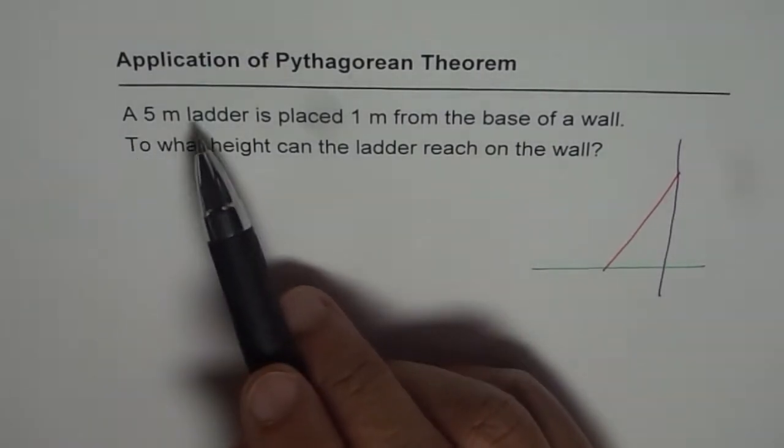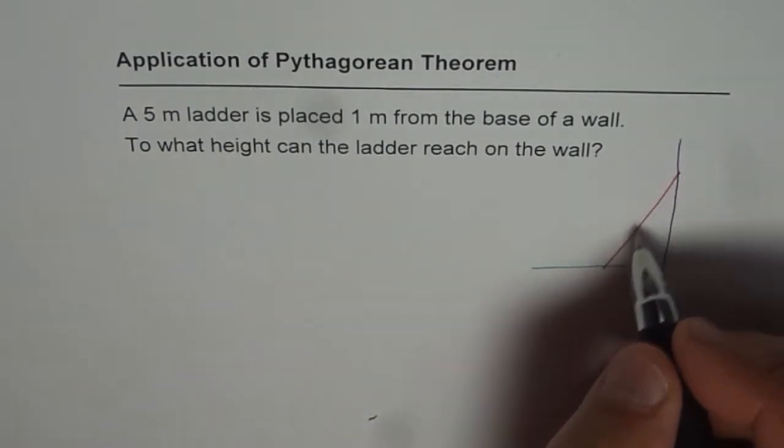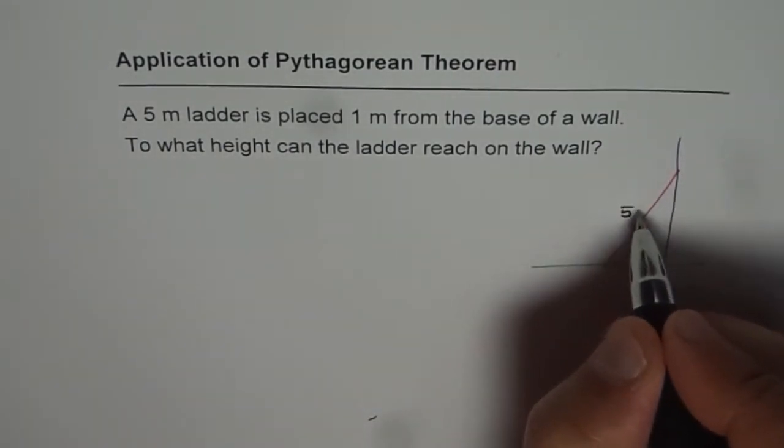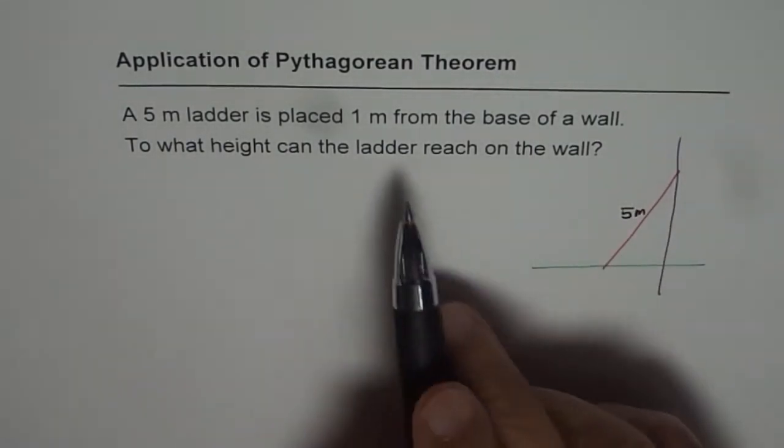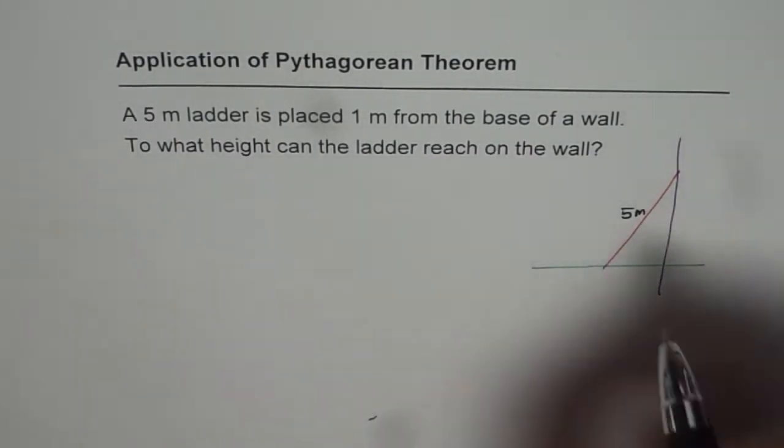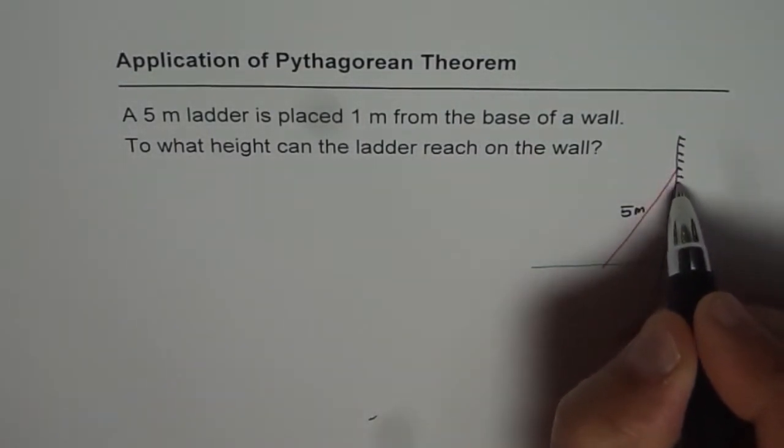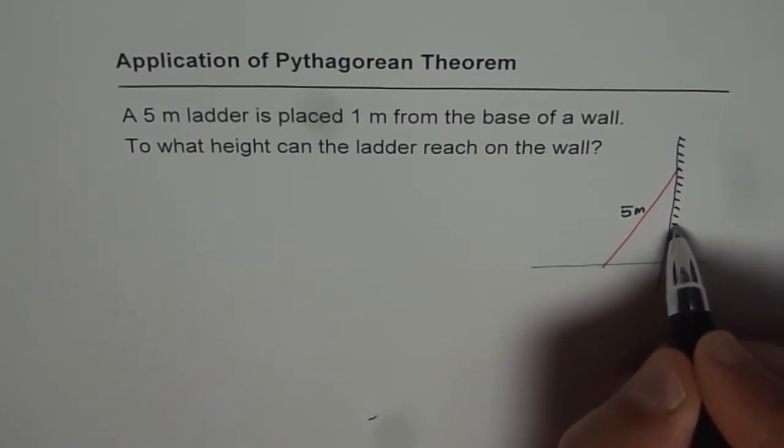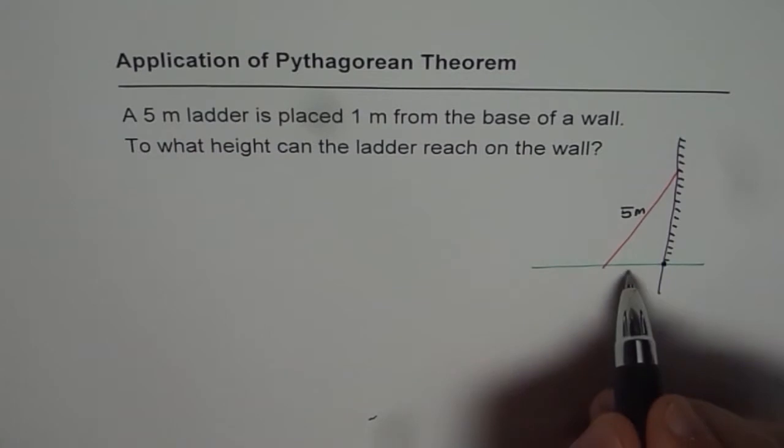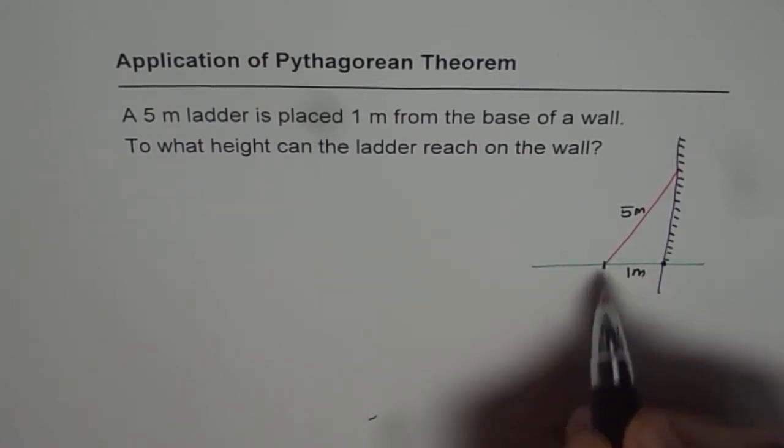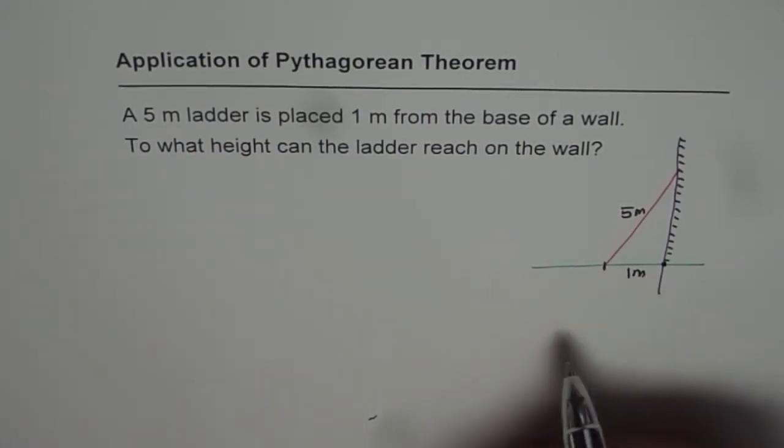We are given a 5 meter ladder. That means the length of the ladder is 5 meters, so here I write 5 meters. 1 meter from base of the wall. Let's say this is my wall. And from the base, that means from this point, it is 1 meter. So this is 1 meter from here to this place.